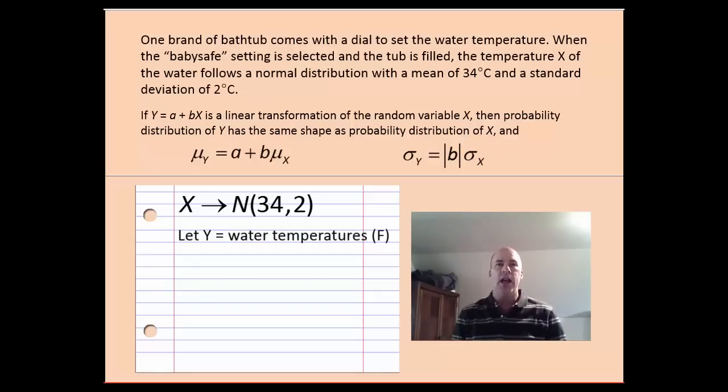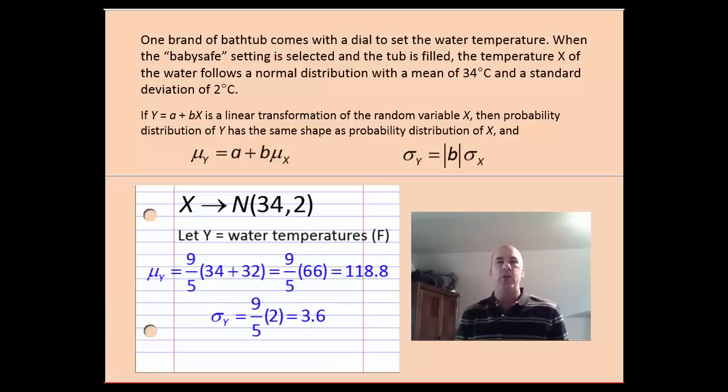But now we use those rules, and we can let y equal the water temperature in Fahrenheit. We can find the new mean by plugging in 34 into the formula for Fahrenheit, and we have a new temperature in Fahrenheit. And we can do the same thing for the standard deviation. In this case, we only multiply by 9 fifths. So we have a new distribution now, where y has a normal distribution with a mean of 118.8, which seems a little warm for me, and 3.6.